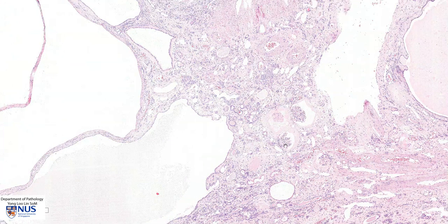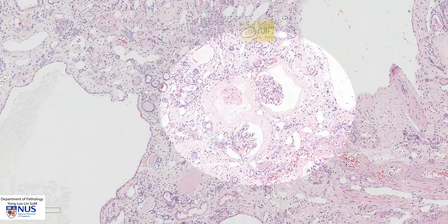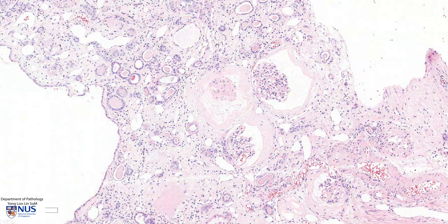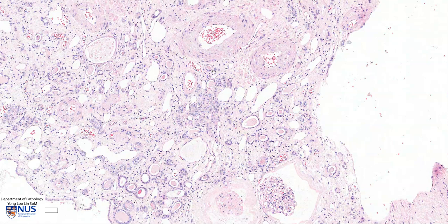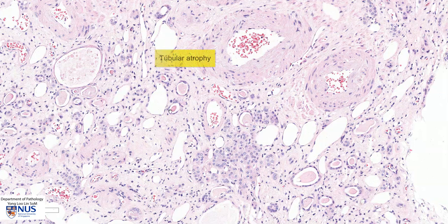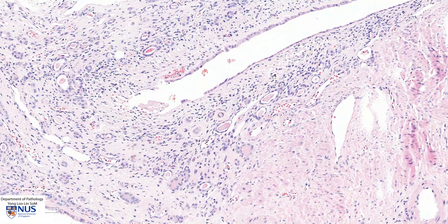In this area, we can still see a few glomeruli, and you can see that the Bowman's space is actually dilated. Here is a sclerosed glomerulus, which can be seen in this condition, especially later in life. In other areas, we can appreciate that there is significant tubular atrophy associated with interstitial fibrosis, and there is also mild chronic inflammation in the interstitium.